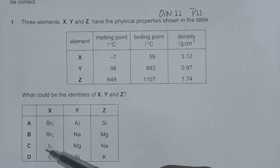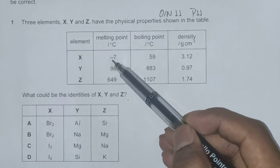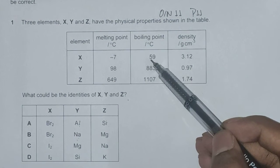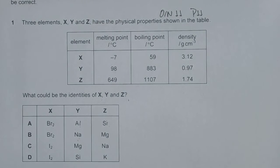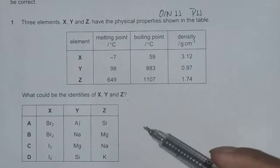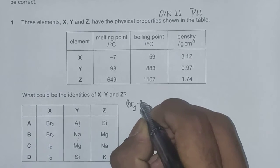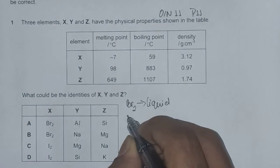From the options we know that X is either bromine or iodine. Looking back to the table, X has a melting point of minus 7 degrees Celsius, boiling point of 59 degrees Celsius, and density of 3.12 grams per centimeter cubed. From our study of group 17, we know that at room temperature and pressure, bromine is a liquid.